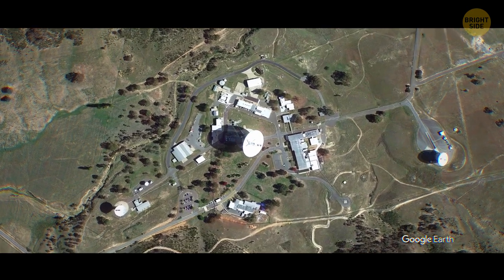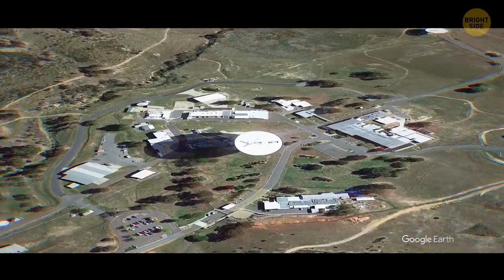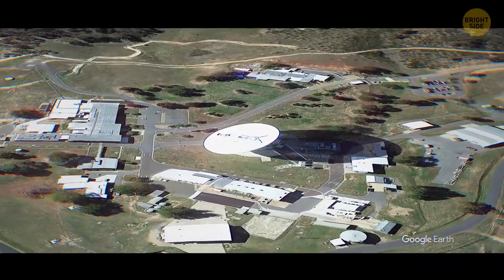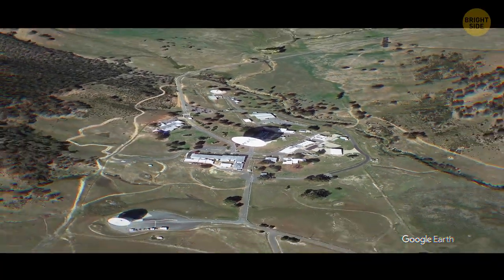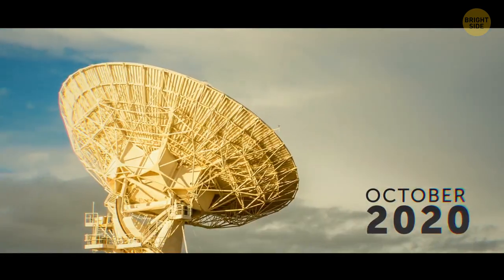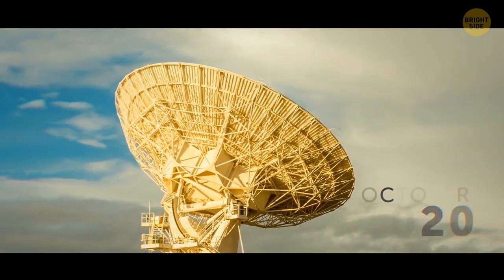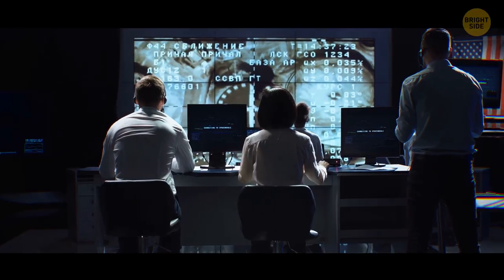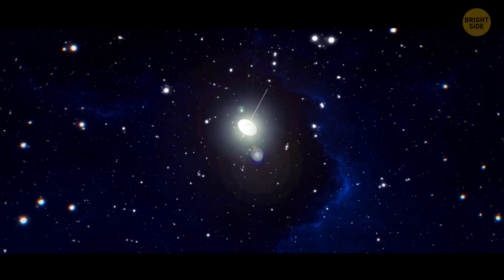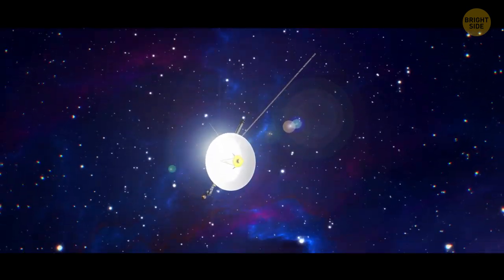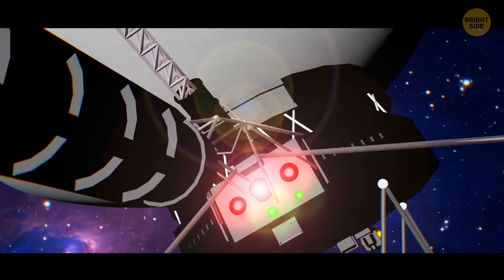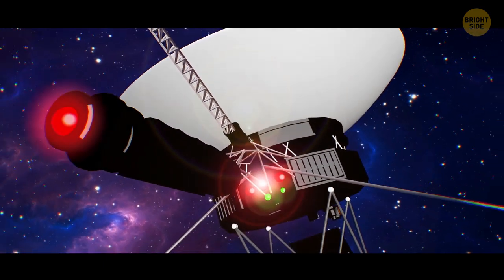In October 2020, the antenna was finally ready for a trial after all the upgrades and repairs. The mission operators sent a set of commands to Voyager 2. And after many months of radio silence, the spacecraft returned the signal. The probe confirmed it had heard the call. After that, the spacecraft carried out the commands.